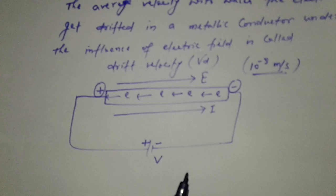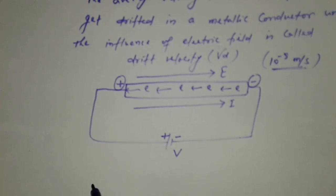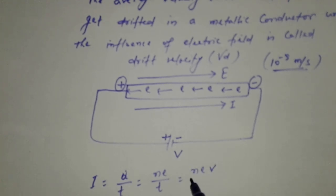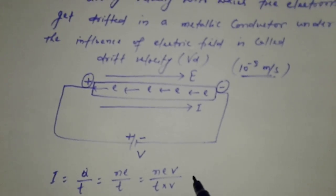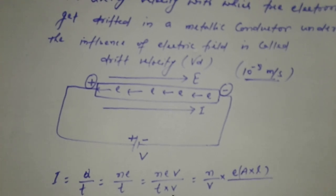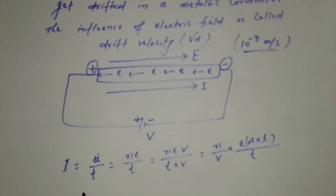We know I is equal to Q by t, and Q is equal to n e. Volume, we can consider as area into length.